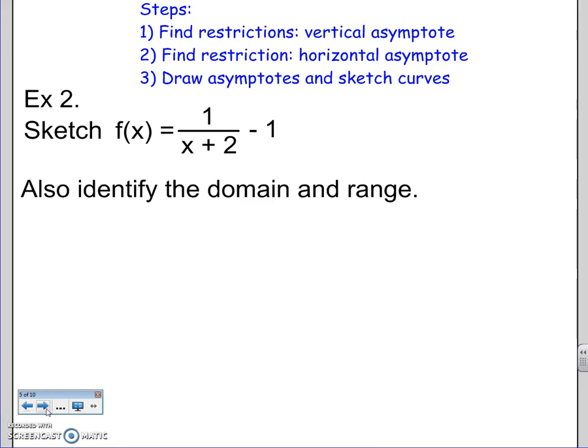So here are our steps. Find our restrictions first. So find our vertical asymptote. Well, that comes from the denominator being zero, right? So vertical asymptote. Alright, and I'm going to abbreviate that from here on as VA.